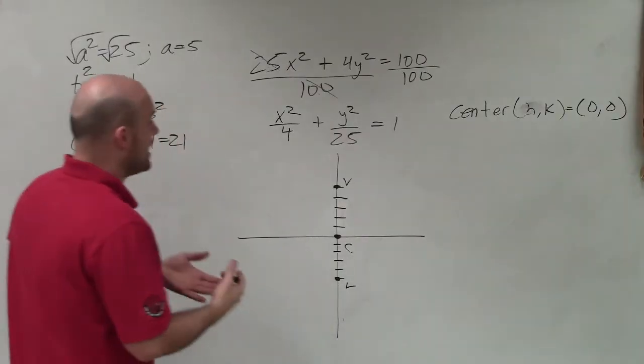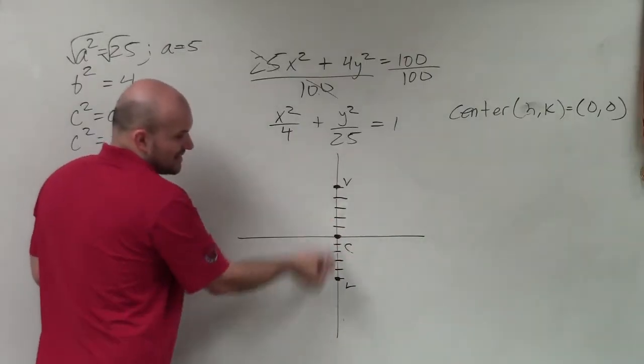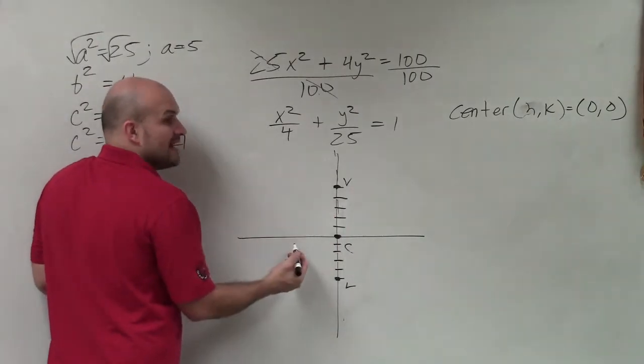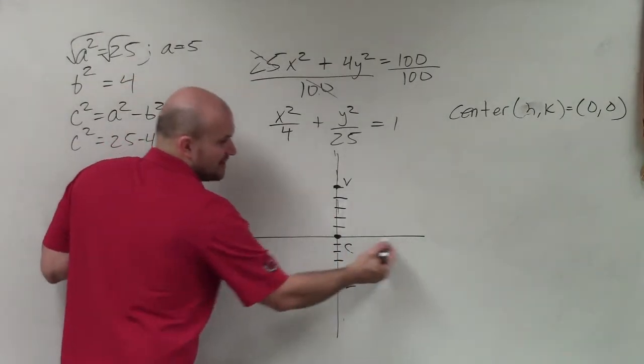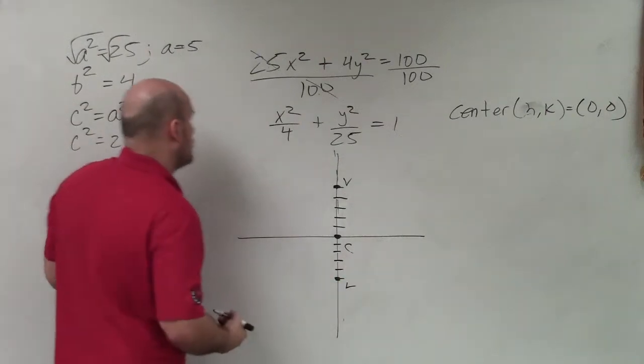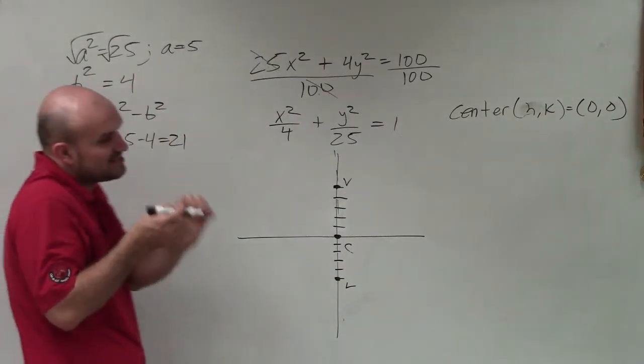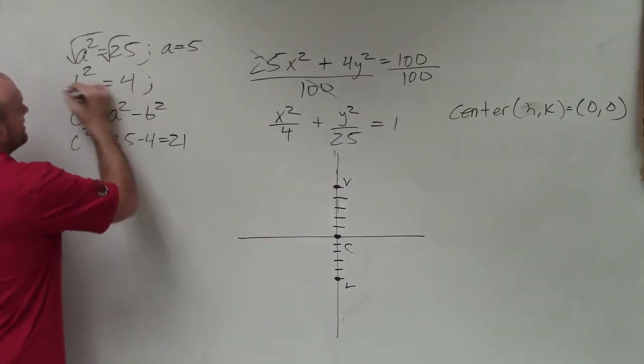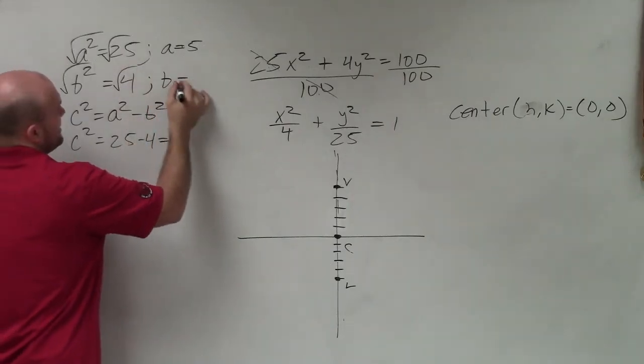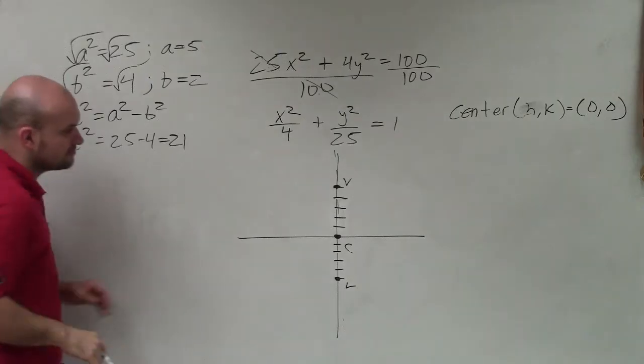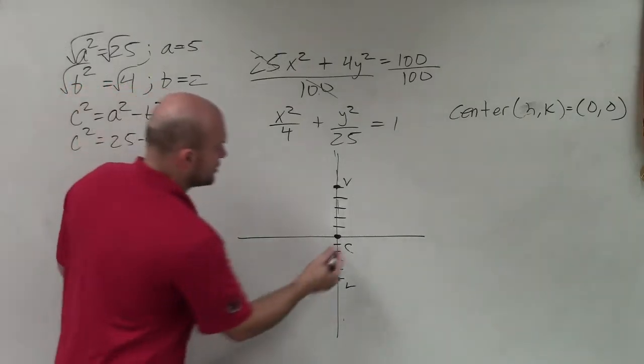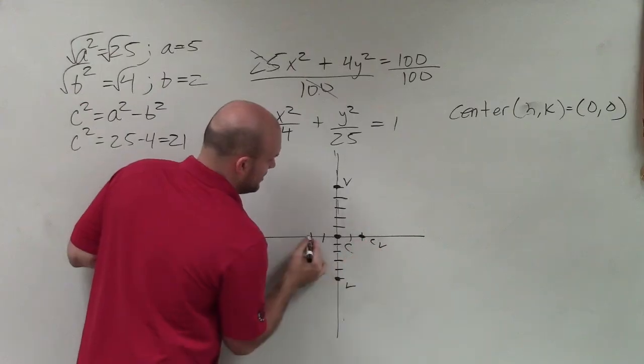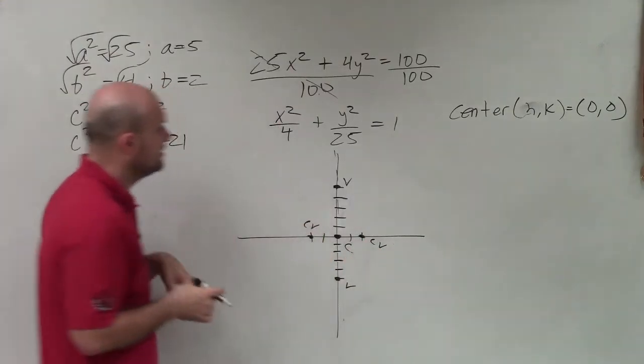To find my co-vertices, so you can see my major axis right here. It's a little dotted line. My major axis is vertical. That means my minor axis is going to be perpendicular to that, which will be horizontal. And the distance from the center to the co-vertices is b. So to figure out that, I take the square root of both sides. And you can see b equals 2. So therefore, I'm going to go over 2. That's going to be co-vertex 1. That's going to be co-vertex 2.